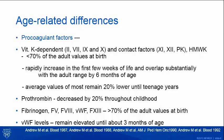Significantly, factor V, factor VIII, fibrinogen, and von Willebrand factor were noted to be higher than adult values at birth. Von Willebrand factor was noted to be elevated until about three months of age, suggesting it may not just be an acute phase reactant perinatally but might also play an undefined role in the development of babies.